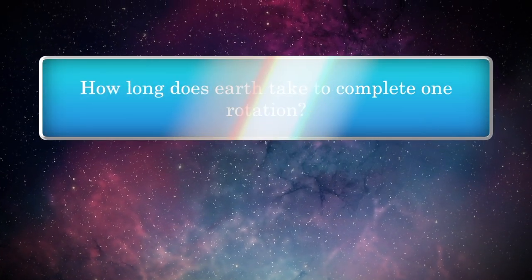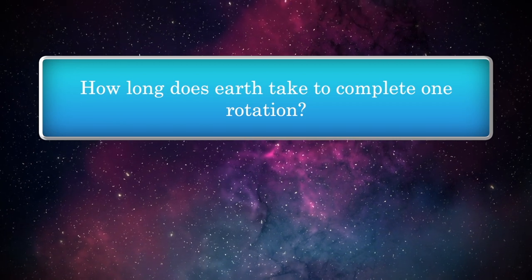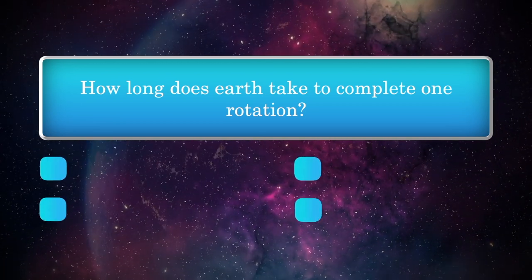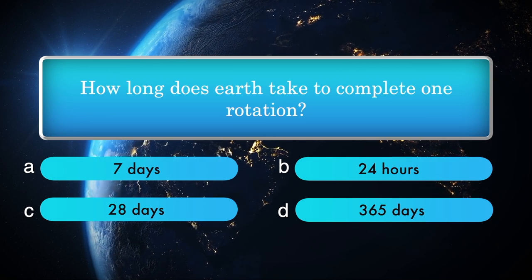How long does Earth take to complete one rotation? Options: 7 days, 24 hours, 28 days, 365 days.